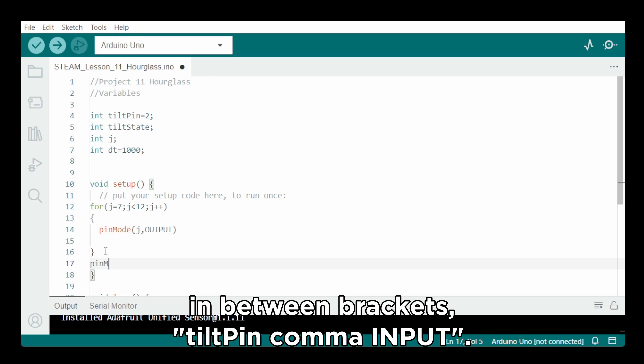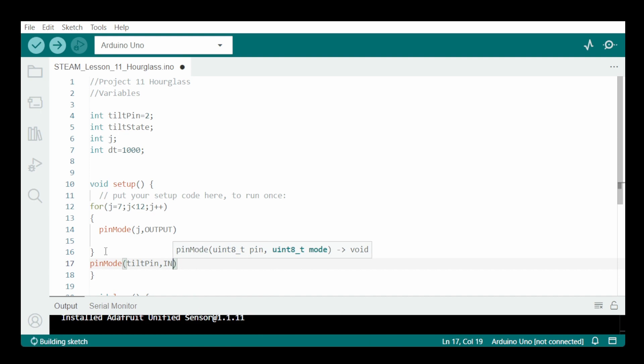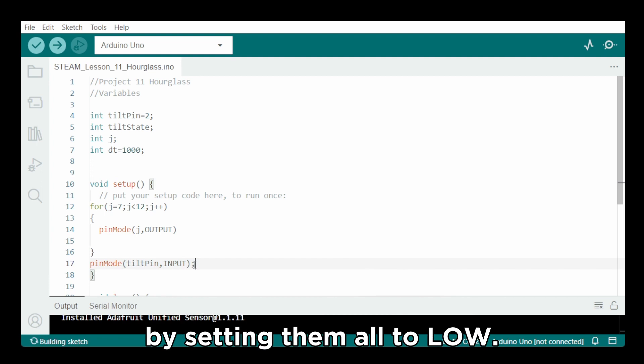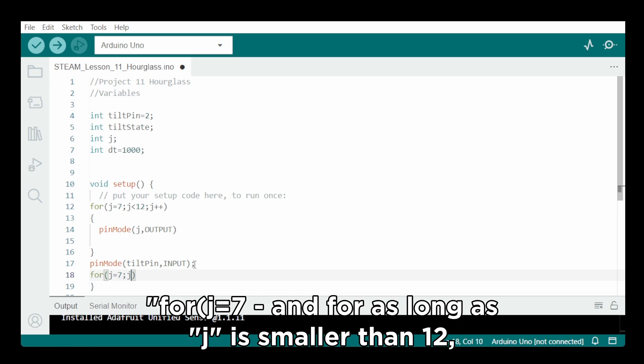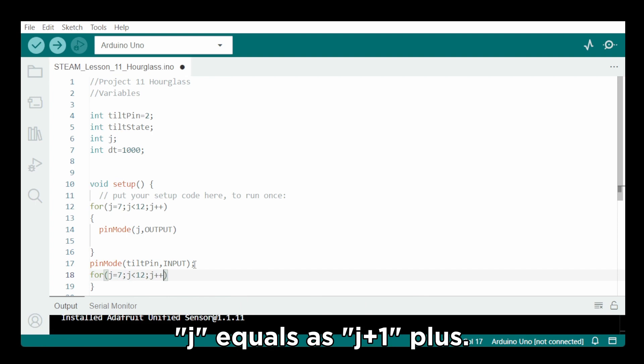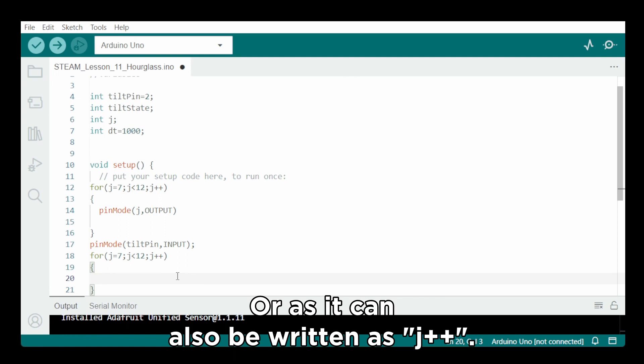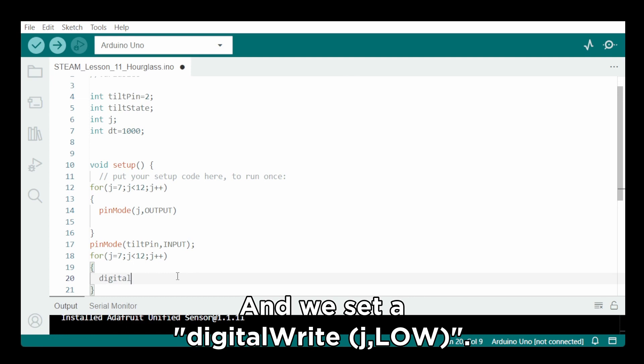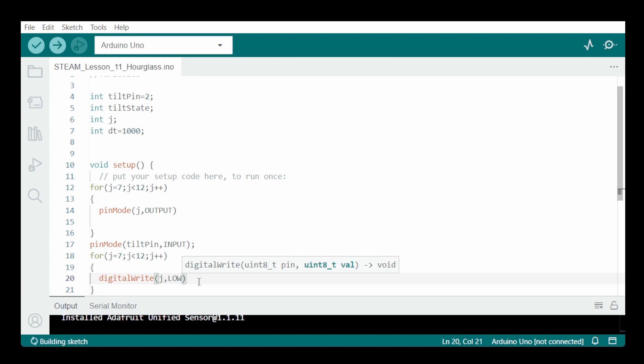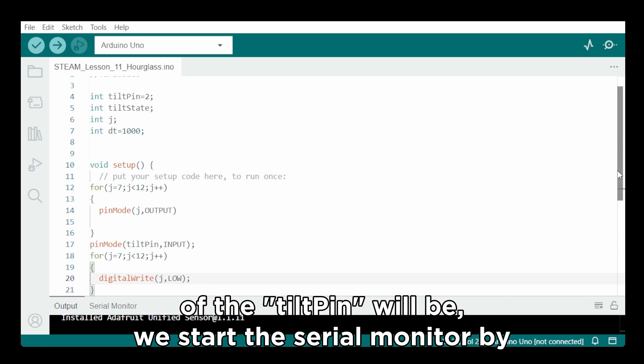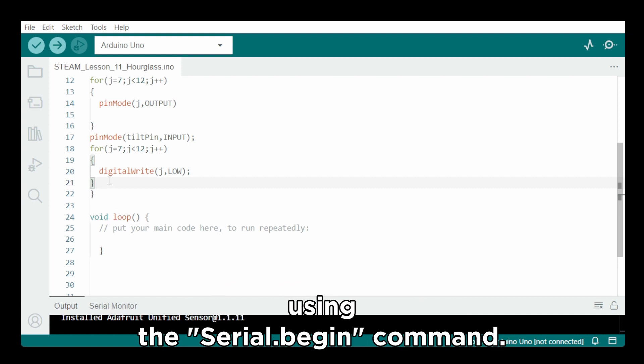Now to start with, we just ensure that all LEDs are off by setting them all to low. For J equals 7, and for as long as J is smaller than 12, J equals as J plus 1, or as it can also be written as J plus plus. And we say a digital write, J comma low. Because it is useful to check on the monitor what the state of the tilt pin will be, we start the serial monitor by using the serial.begin command. That's it for the setup.